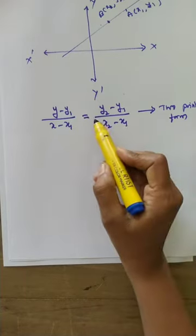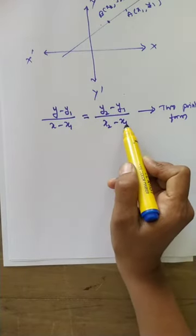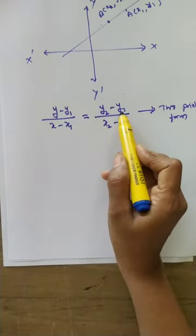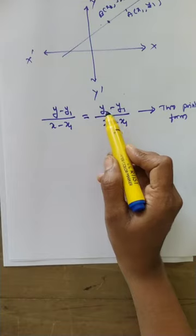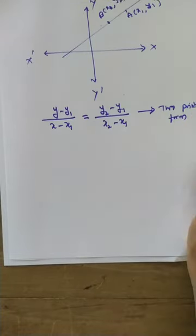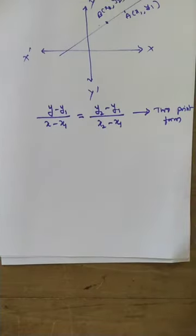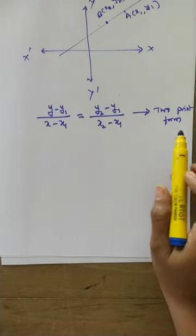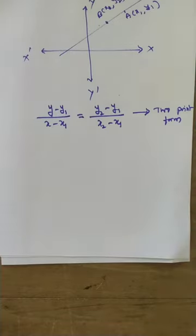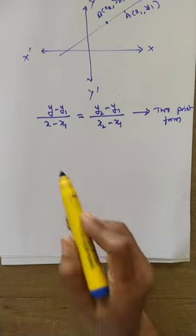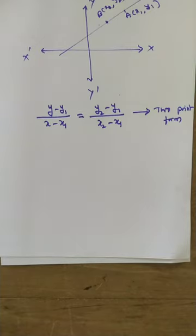Here two points are present: x1, y1 and x2, y2 — both are in this equation. But there is no slope m, and intercepts are not there. No x intercept, no y intercept, no slope. In this form, only the two points are used.